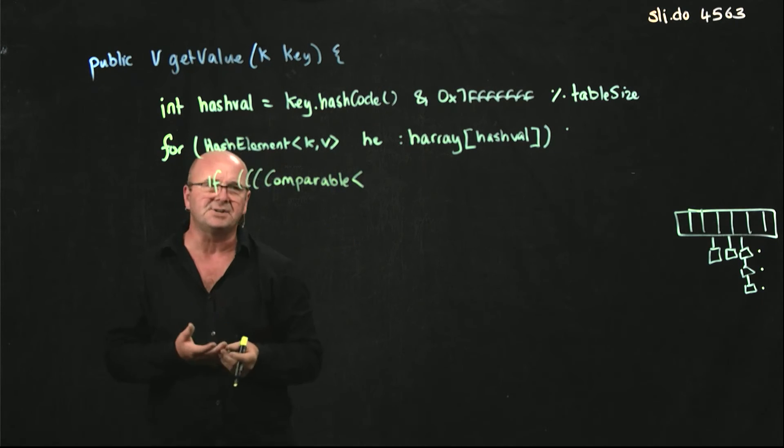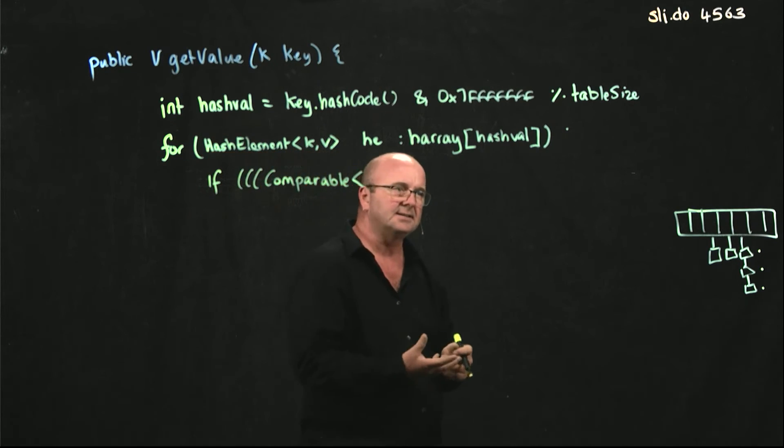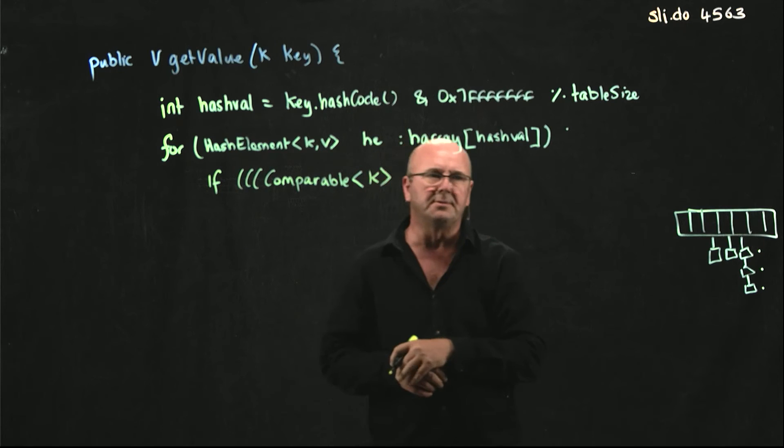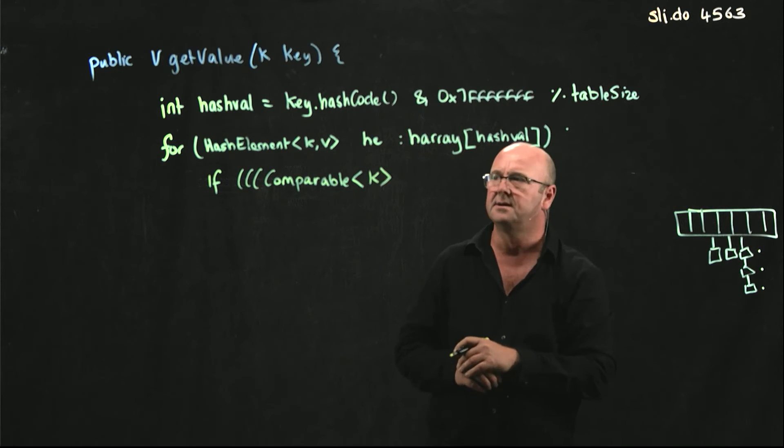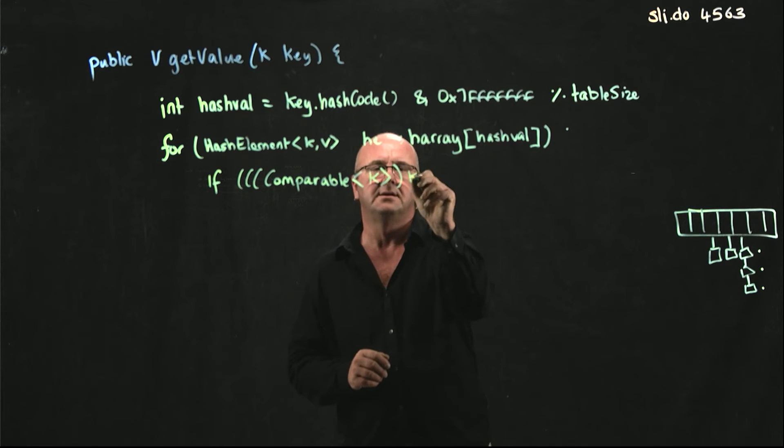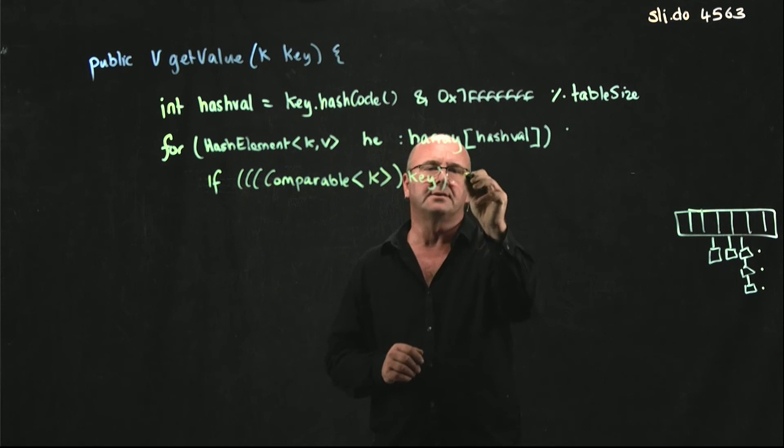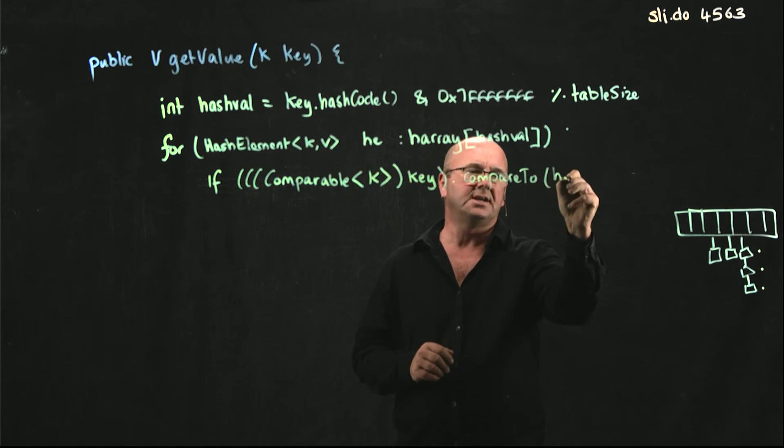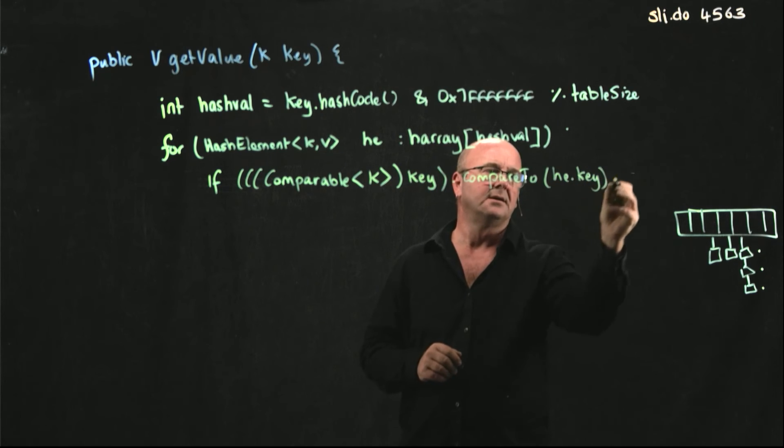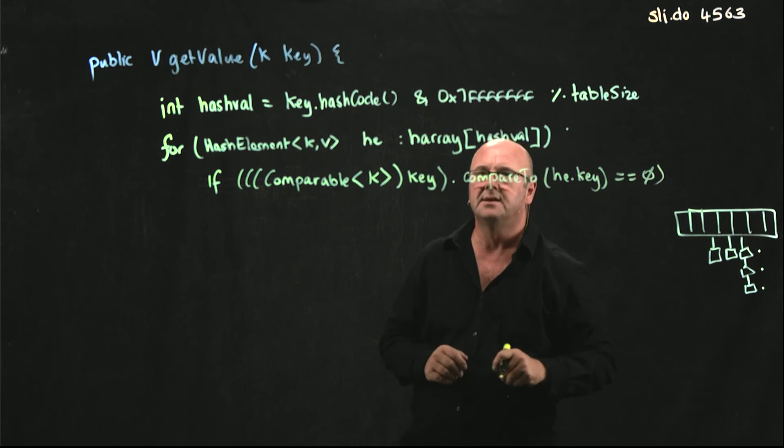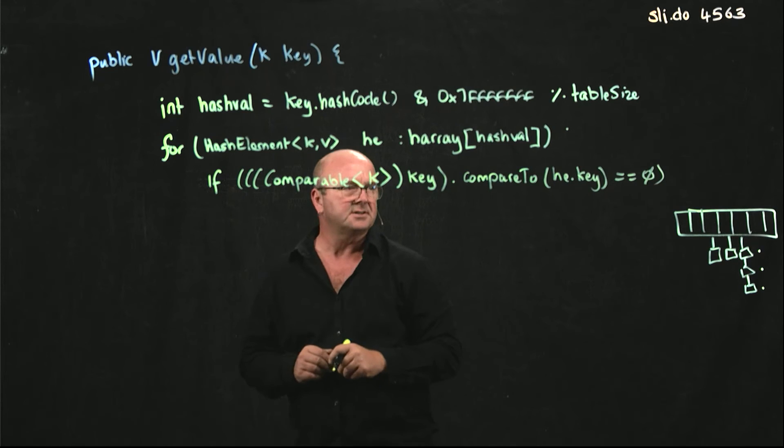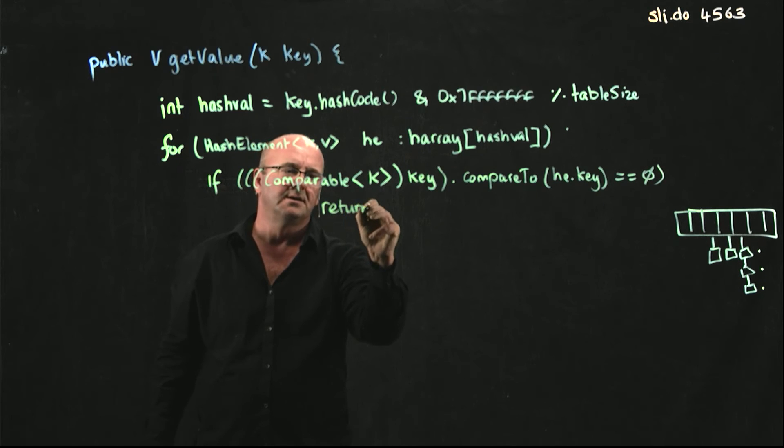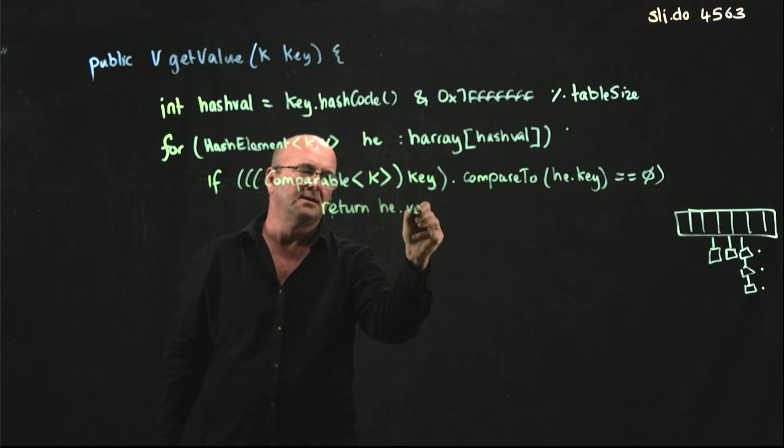This time what we're comparing is not hash elements, it's not ease, it's keys. So comparable key, key dot compare to, he dot key is equal to zero. If that's true, that's the thing we want. If that's the thing we want, we just have to return the value, return he dot value.